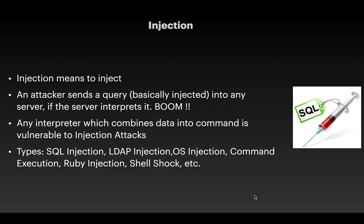What is Injection? In OWASP it is the A1 category — the first category. Injection basically means to inject something, similar to how a doctor injects medicine into our body. In the same manner, we inject something into a web application. An attacker sends a query injected into a server, and if the server interprets what the attacker has injected, we get a successful injection. Any interpreter that combines data into a command is also vulnerable to injection attacks — if it takes input in the form of a query or command and executes it, it is vulnerable.